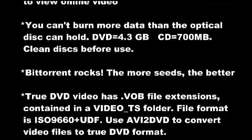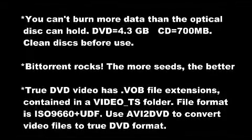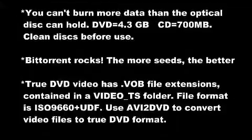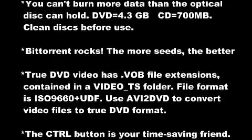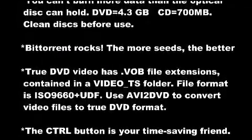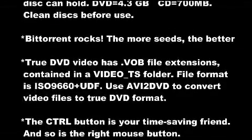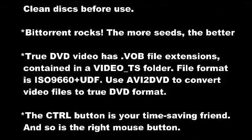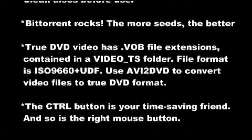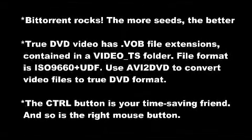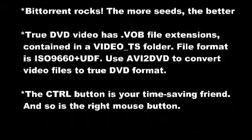In order to create DVD movies that play in any DVD player, the video files must have VOB extensions and be contained in a Video_TS folder. Programs like AVI to DVD can convert the common video file format AVI into proper DVD video format.